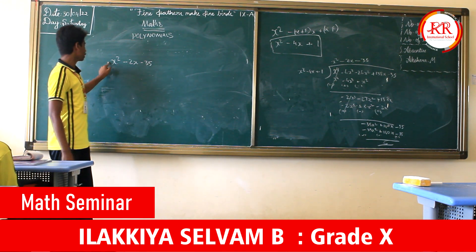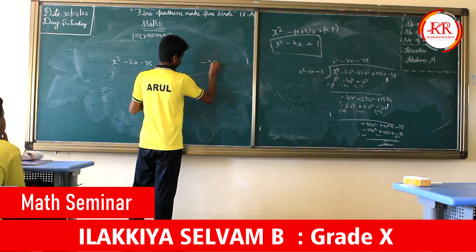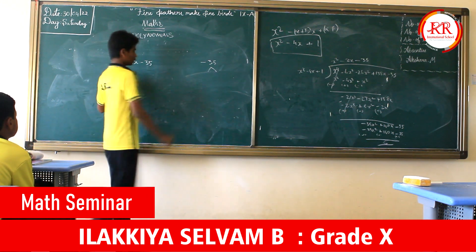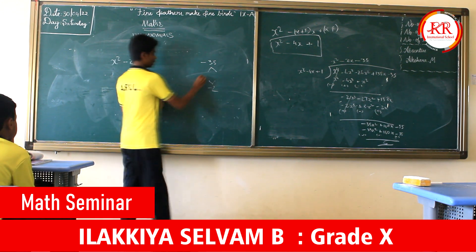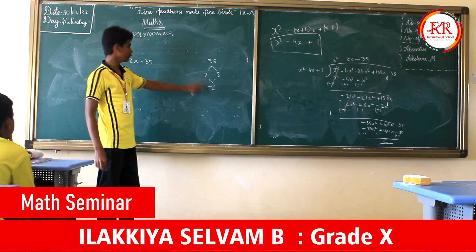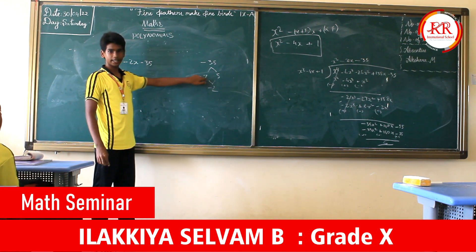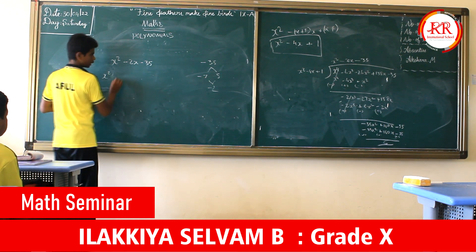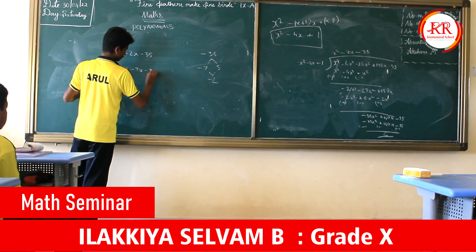We multiply the coefficient of x², which is 1, with the constant term minus 35 to get minus 35. We need to split the middle term minus 2x into two terms whose product is minus 35 and whose sum is minus 2. The two numbers are minus 7 and plus 5, since minus 7 plus 5 equals minus 2 and minus 7 times 5 equals minus 35. So we split: x² plus 5x minus 7x minus 35.